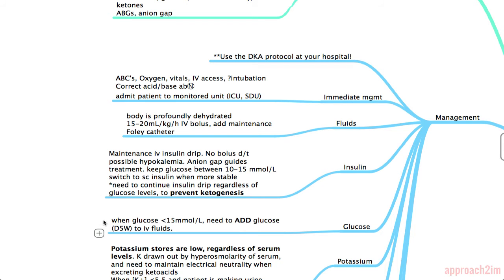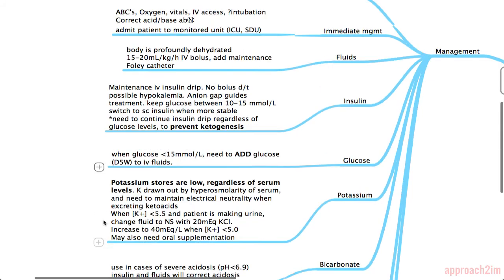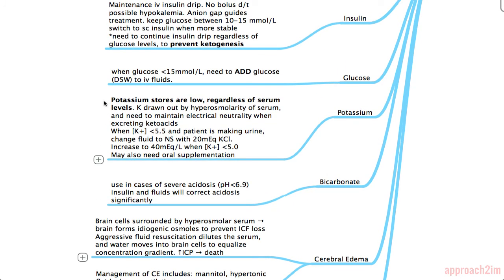When the glucose is less than 15, add glucose in the form of D5W to the IV fluids. A patient in DKA will have low potassium stores regardless of serum levels, as potassium is drawn out due to hyperosmolarity and the need to maintain electrical neutrality when excreting keto acids. Once potassium is less than 5.5 and the patient is making urine, change the fluid to normal saline with 20 mEq KCl, increasing to 40 mEq when potassium is less than 5.0. Oral potassium supplementation may also be needed to maintain normal levels.